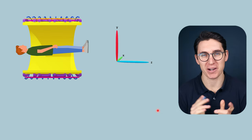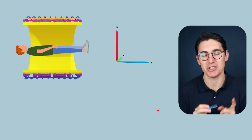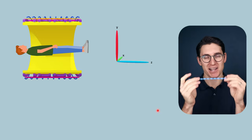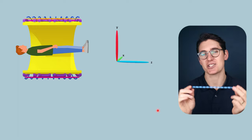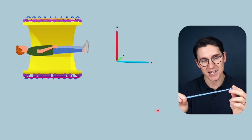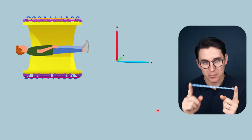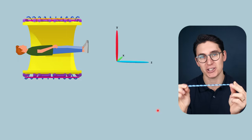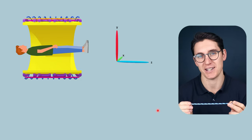Hello everybody and welcome back. By now we've spent most of our time looking at how exactly we generate an MRI signal. We've seen that if we place an element that has a non-zero spin within an external magnetic field, that element will precess at a frequency known as the Larmor frequency, which is dependent on the gyromagnetic ratio of that element as well as the strength of the external magnetic field.